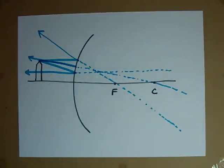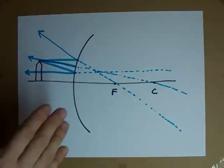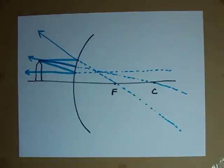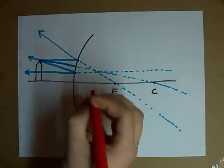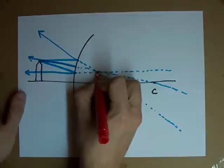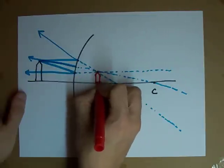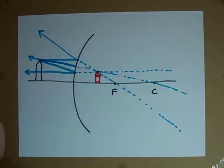What you'll notice is that all three of these dashed lines, the light isn't actually traveling there, but these reflected rays travel along those lines. They meet right there. So the image lies right there.